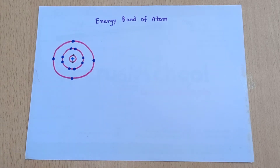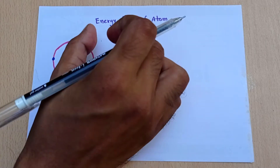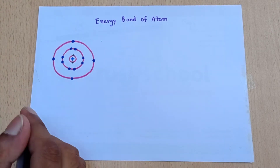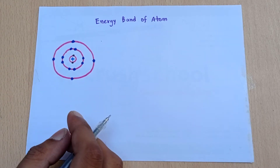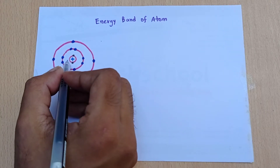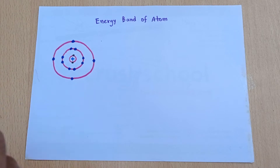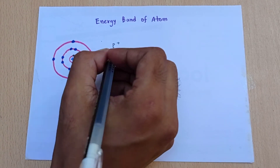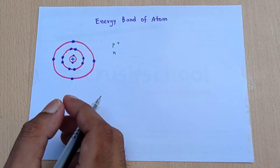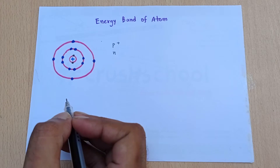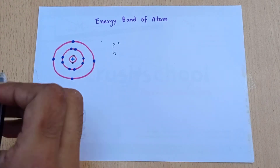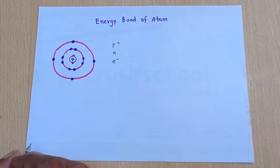Today's topic is about energy bands. In an atom, you know about the orbit, the electron, and the nucleus. The nucleus is the center of the atom and contains two components: protons, denoted as P+, and neutrons, denoted as N (neutrons have no charge). Another component is the electron, denoted as E−. The question is: what is actually the energy band?